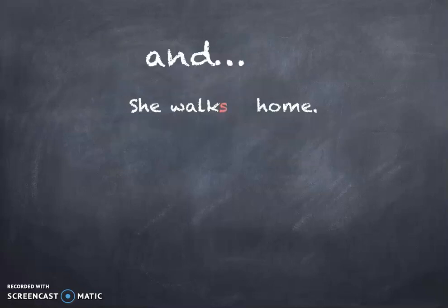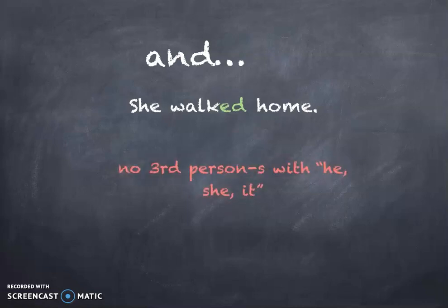There is one more thing that makes the simple past easy. When you look at the sentence 'she walks home', it is in the simple present, and the verb 'walk' has the third person 's' — the he/she/it 's'. When you make this sentence in simple past, there is only the 'ed' after 'walk': 'she walked home'. So there is no he/she/it 's' in the simple past.